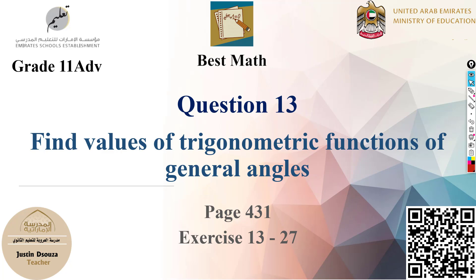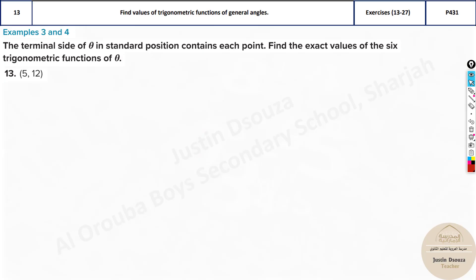Question number 13 is about finding the values of trigonometric functions of general angles. The method is a particular method and all the problems are similar. The terminal side of theta in standard position contains each point. Find the exact value of six trigonometric functions of theta.